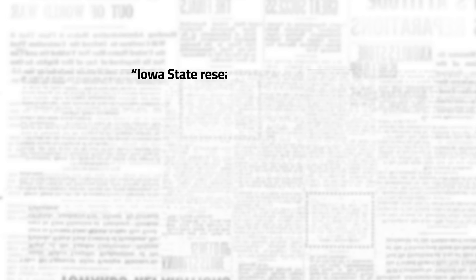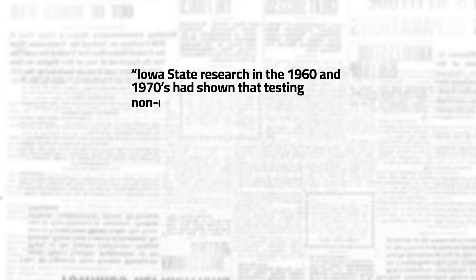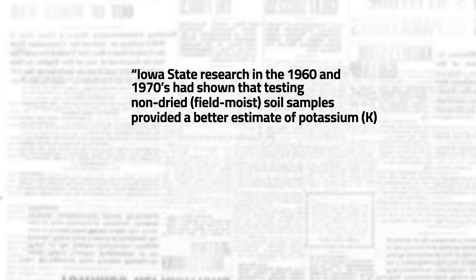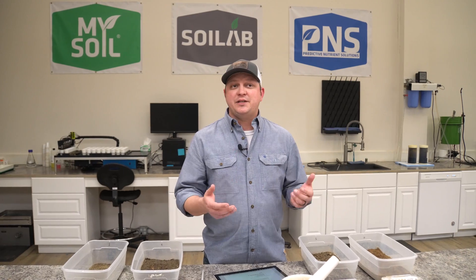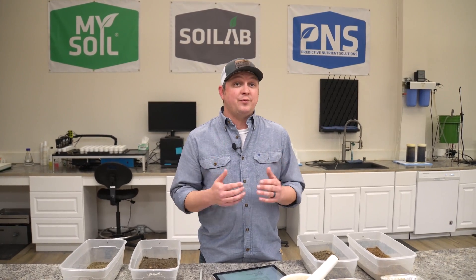He says, quote, Iowa State research in the 1960s and 70s had shown that testing non-dried or field moist soil samples provided a better estimate of potassium fertilizer needs than testing dried samples, but both procedures provided similar estimates for phosphorus. This method was adopted by the Iowa State University soil testing lab for phosphorus and potassium and was used throughout much of the 1970s and 1980s, but they decided to discontinue this method because it didn't align with what other soil testing labs across the country were doing. So they did discontinue the use of this method and go back to the dried and ground method so that it was more standardized across the conventional soil testing laboratories.